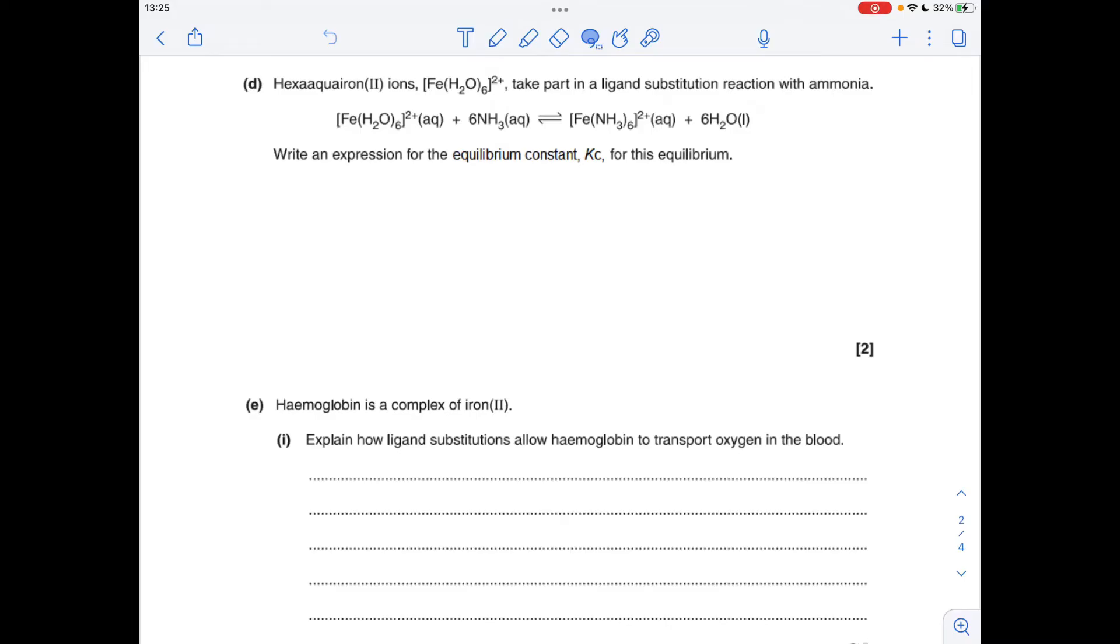Part D, we've got to write the expression for the equilibrium constant for this equilibrium. Just remember that it's the equilibrium concentrations of the products over the reactants, any balancing numbers become powers. And just a little catch in this one, the water, because it's a liquid, remember liquids don't go into Kc expressions. So that's what we get for that.